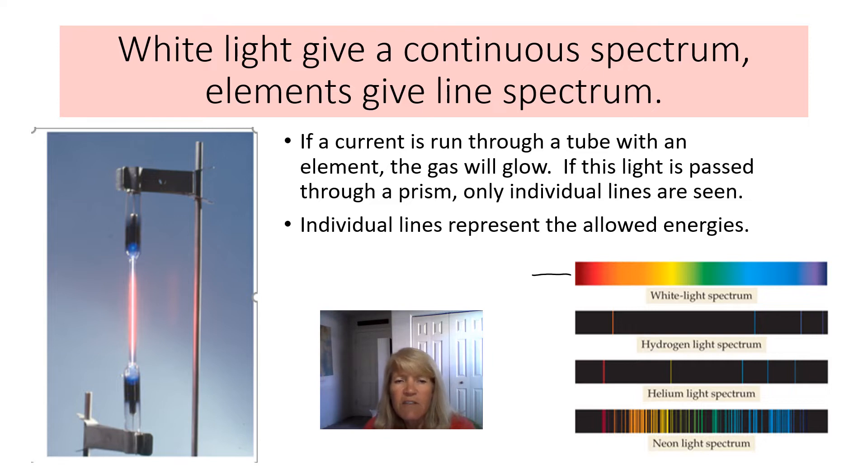Now it's a different thing if you look at an element. So in this tube on the side here, there is hydrogen gas in the tube and a current is run through the tube and the gas glows. Now if this light is passed through a prism, you don't see a continuous spectrum. What you see is these individual lines. And it's unique for every element. So you can see that hydrogen has those three lines, helium has different lines, neon has different lines, and they have different colors. And so this is a piece of evidence that's used to describe electrons in atoms.